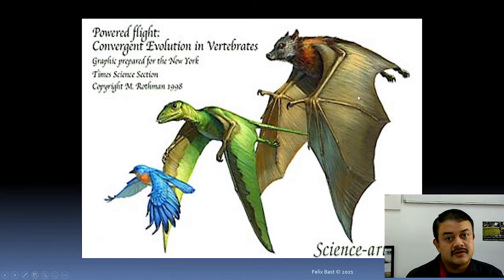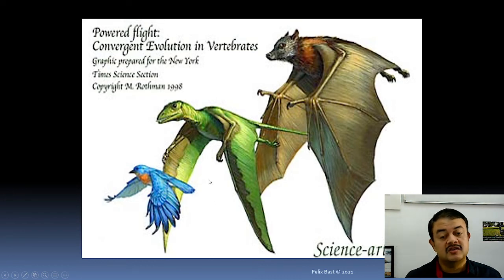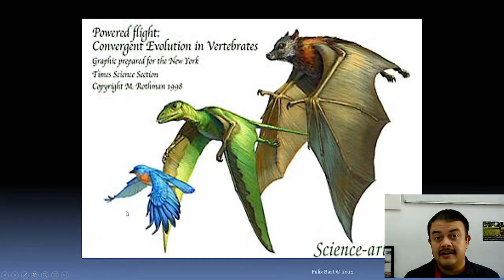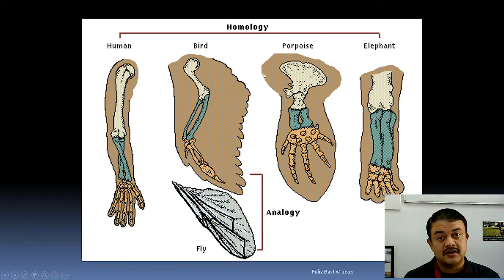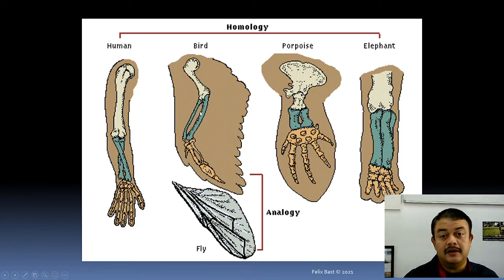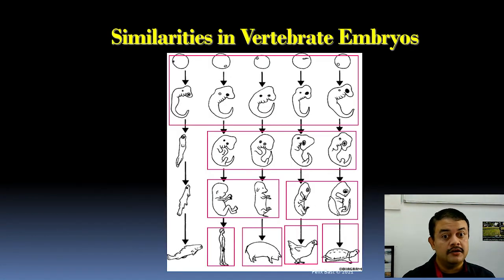By contrast, wings of bats — technically a tetrapod vertebrate forelimb — compared with bird wings, and then also butterfly wings, represent convergent evolution. That is analogous traits. Homology is structure arising from divergent evolution, while analogous traits — like the wings of birds and the wings of mosquitoes — arise from convergent evolution.